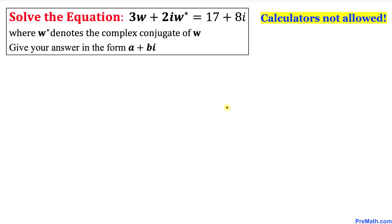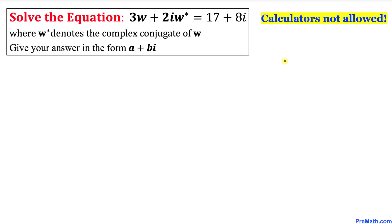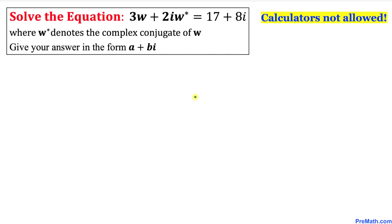Welcome to pre-math. In this video tutorial we are going to solve the equation 3w plus 2i times w-star equals 17 plus 8i, where w-star denotes the complex conjugate of the complex number w. We are supposed to give our answer in the form a plus bi. Note that the star is also called an asterisk, and we are not supposed to use calculators of any kind.